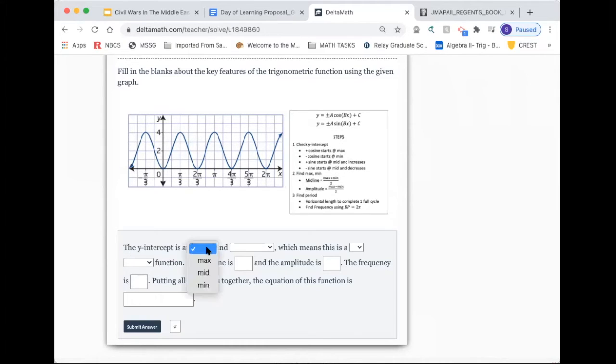So we're going to go ahead and fill it out. The y-intercept is at minimum. We don't really care if it's increasing or decreasing if it is either at maximum or minimum, so not applicable. Which means this is a negative cosine function.